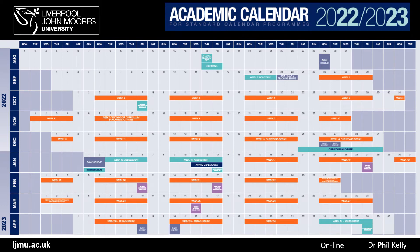You can download the academic calendar from the university website, and it will show the different teaching weeks highlighted in orange on this diagram, starting with week one. Week one is reserved for induction, and your actual teaching starts in week two, which will be Tuesday October the 4th. Typically, there are 12 weeks before Christmas, and then a further 11 or 12 weeks before the Easter break starting in January, representing the two different semesters.